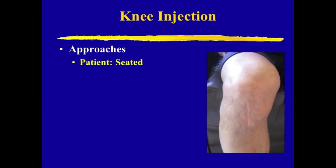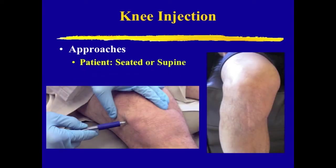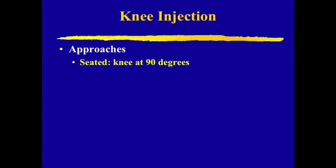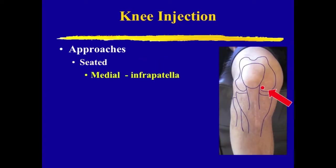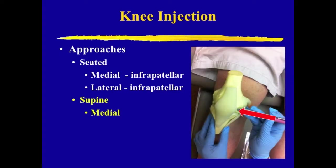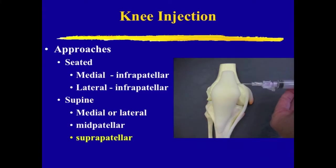When the patient is seated, the knee is at 90 degrees. When the patient is supine, the knee can be positioned anywhere from 0 to 30 degrees. When the patient is seated and the knee is at 90 degrees, you can approach the knee joint in the anterior medial or lateral infrapatellar position. When the patient is supine, you can choose a medial or lateral approach either at the mid-patellar or suprapatellar level.